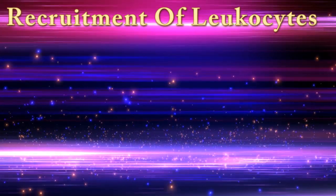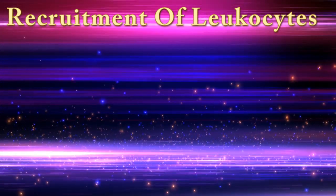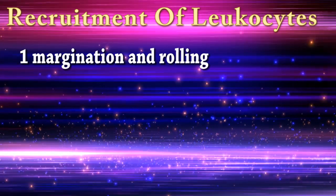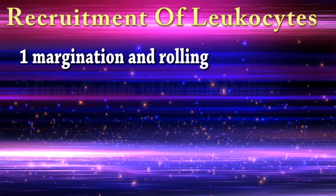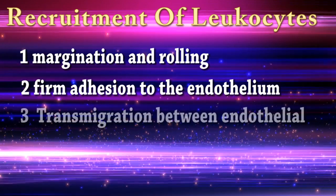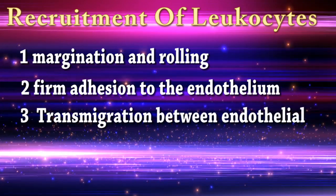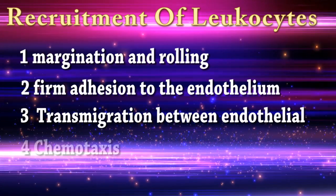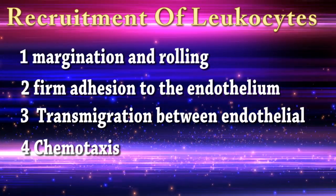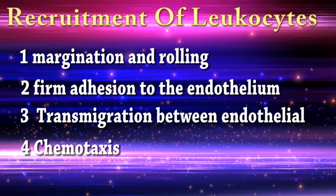Recruitment of leukocytes from the vascular lumen to the extravascular space consists of: one, margination and rolling along the vessel wall; two, firm adhesion to the endothelium; three, transmigration between endothelial cells called diapedesis; four, migration in interstitial tissues toward a chemotactic stimulus called chemotaxis.